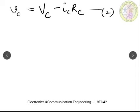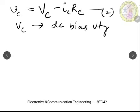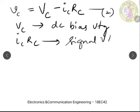Equation 2 has two quantities on the RHS. The first one is capital VC, which is the DC bias voltage at the collector. The second part, ic × Rc, is the signal voltage. So the signal part is: vc = −ic × Rc.